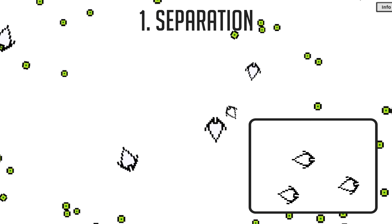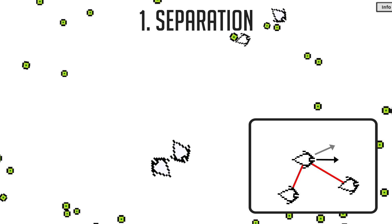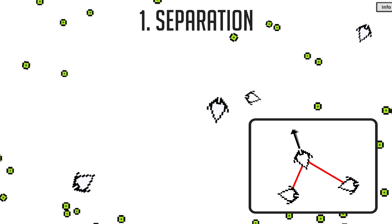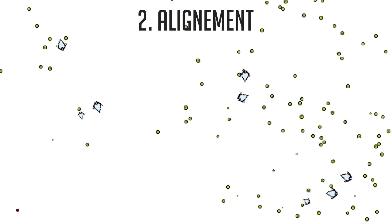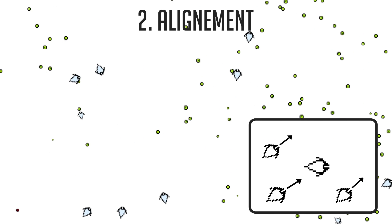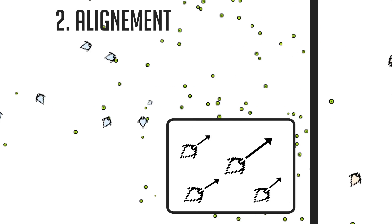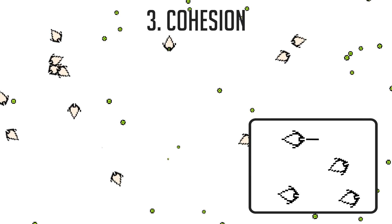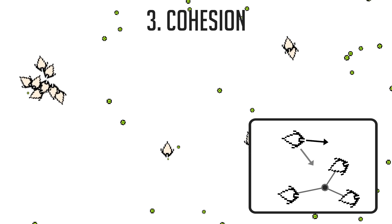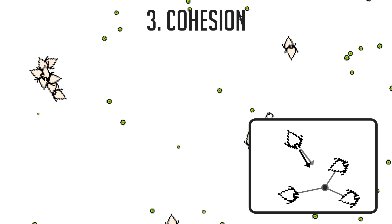So back to it. The separation rule steers the entity away from others that are too close in order to avoid collisions. Then the alignment rule steers the entity in the same direction as others nearby to form the actual herd. And finally, the cohesion rule steers them toward the center of nearby entities to promote keeping the herd together. Combined together, these three rules produce a fascinating behavior that emulates many animals moving together in a pretty realistic and dynamic way.